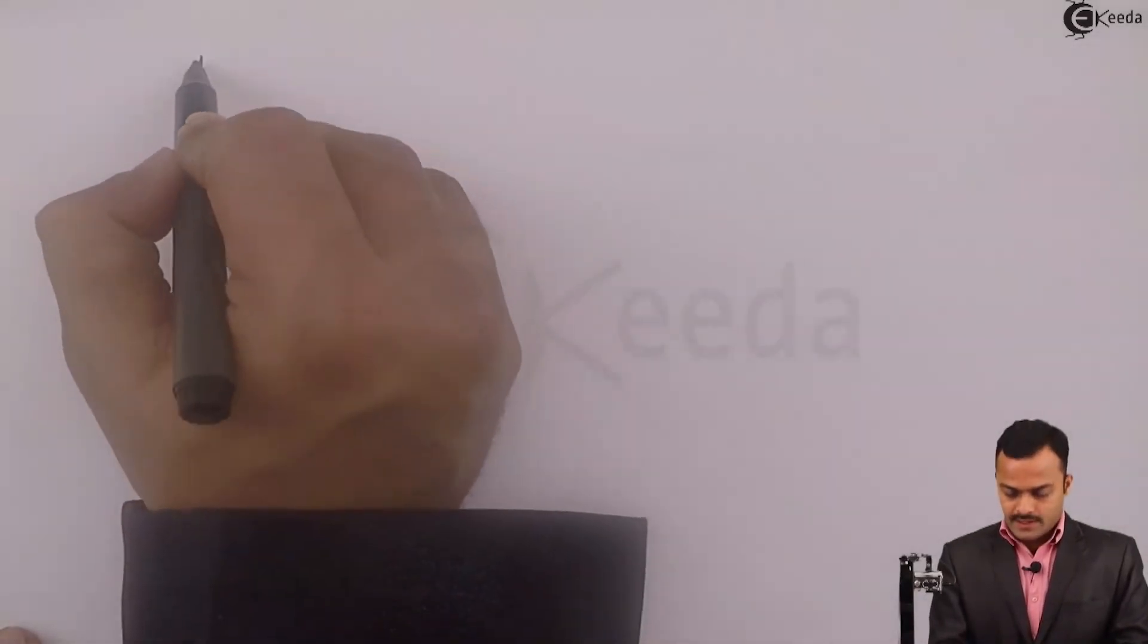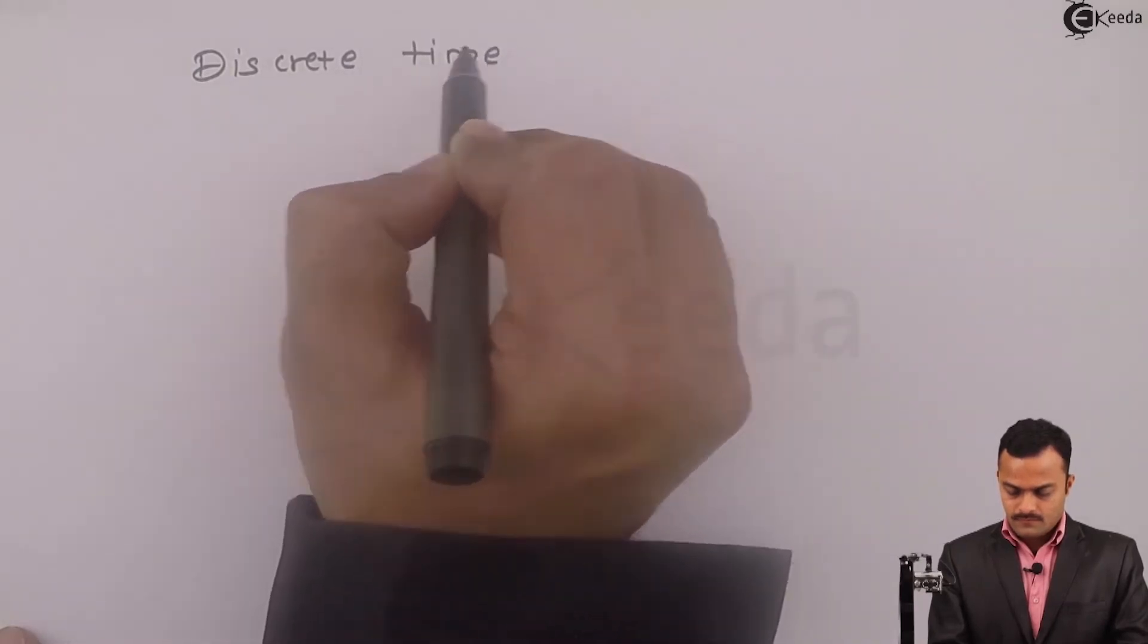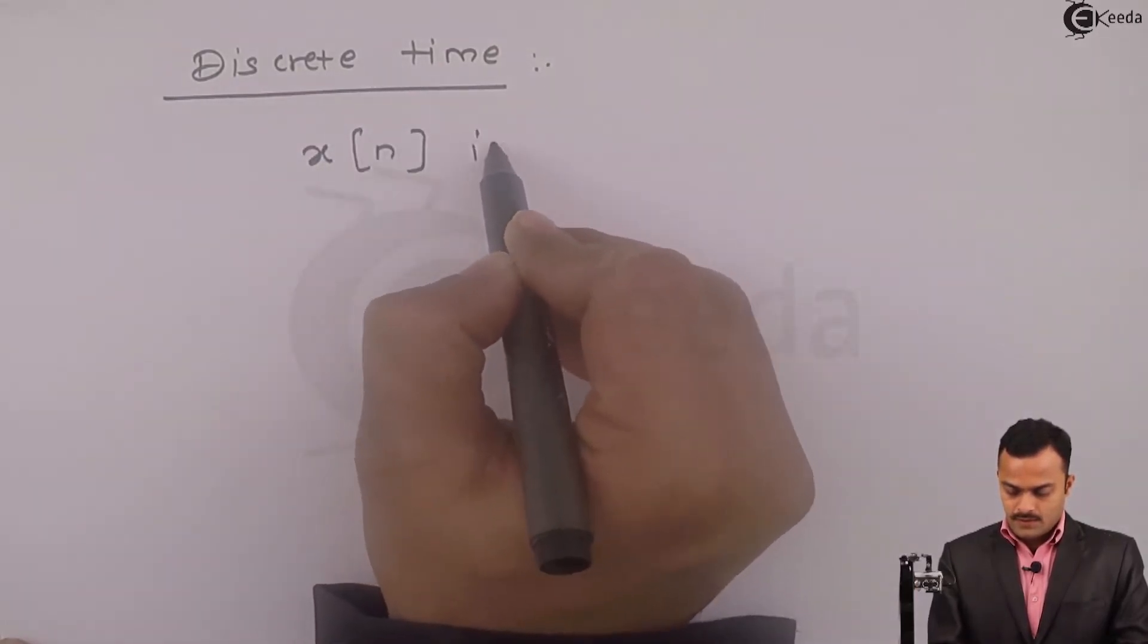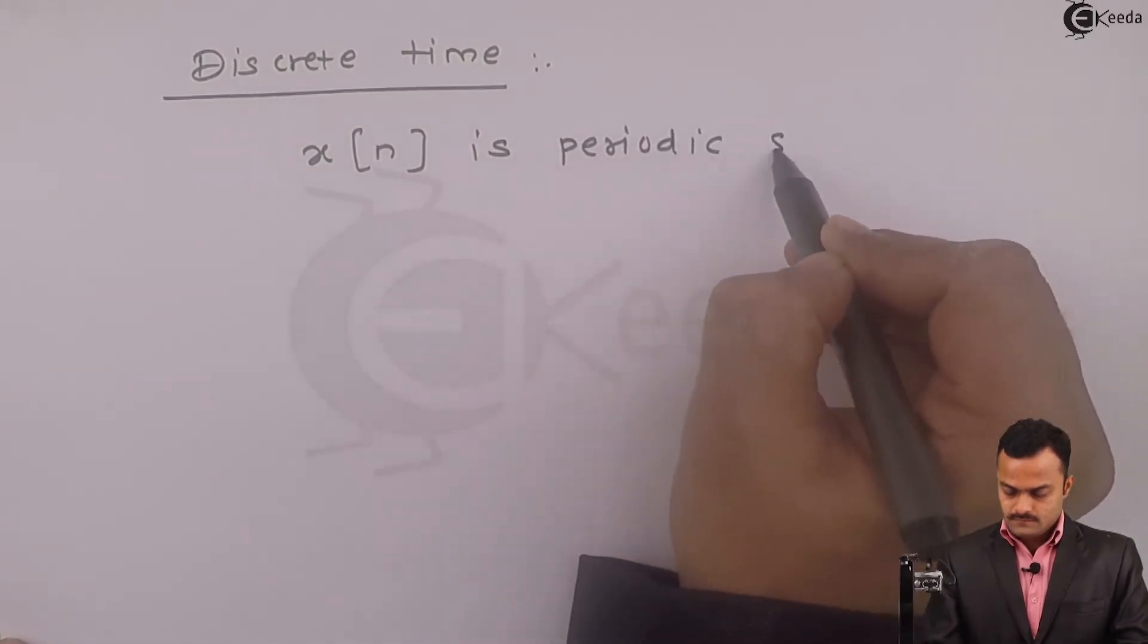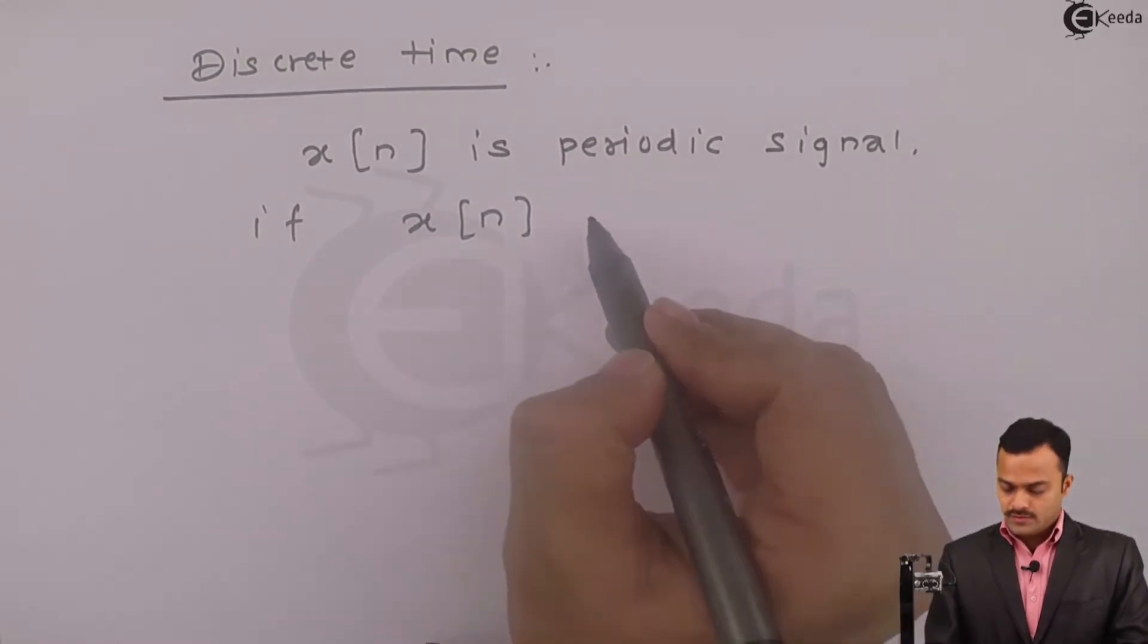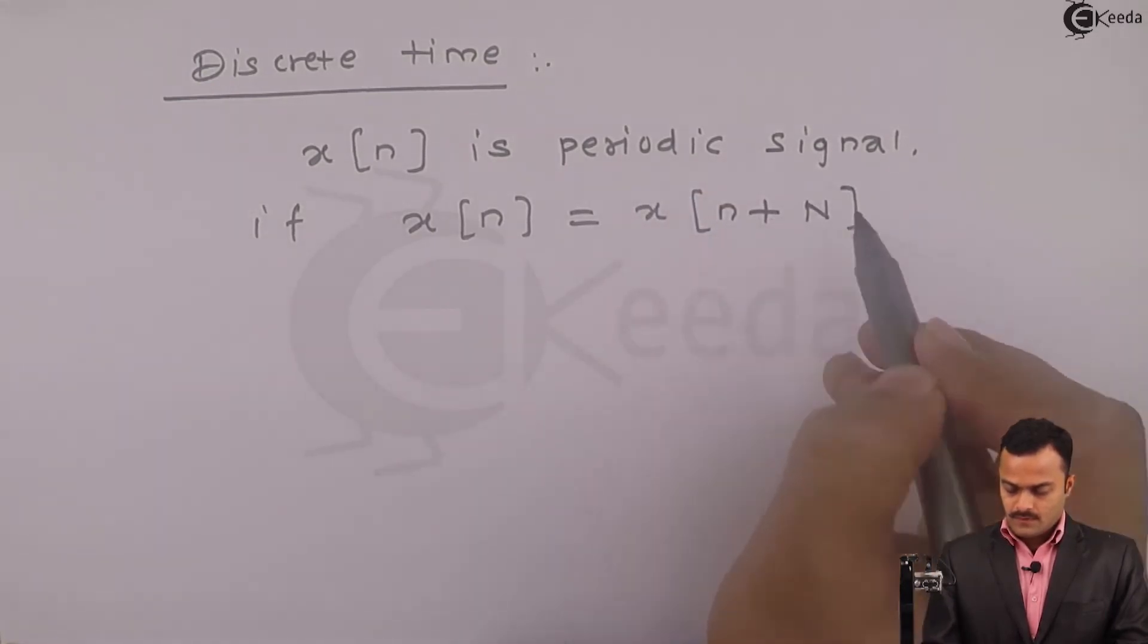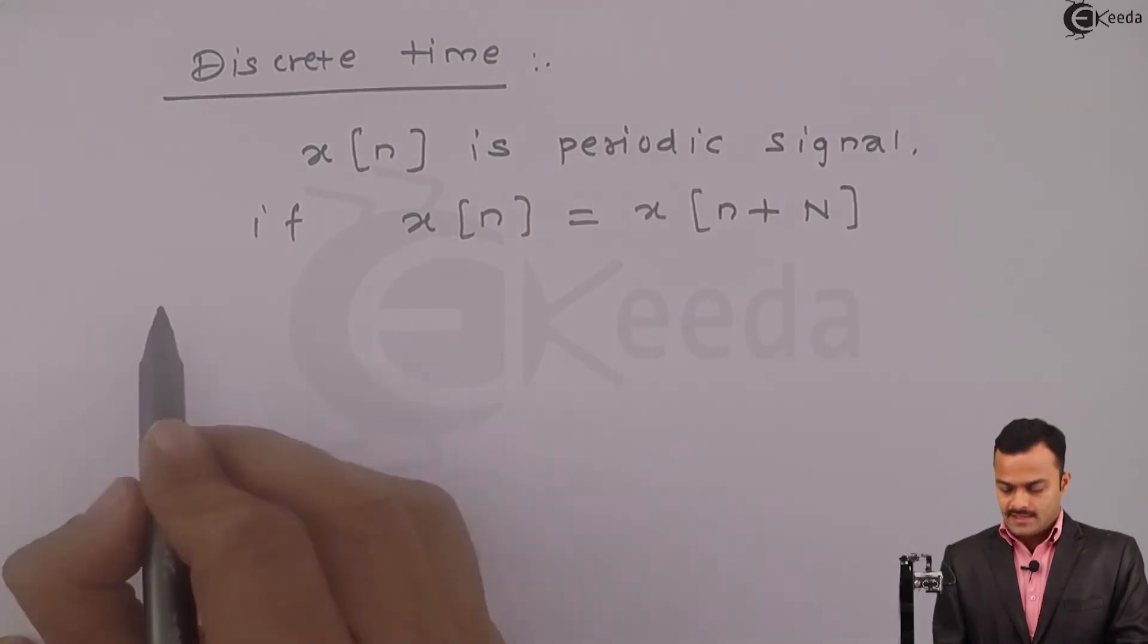So for discrete time, x(n) is periodic if it is repeating its values after every time span. So x(n) equal to x(n plus capital N), then the signal can be considered as periodic.